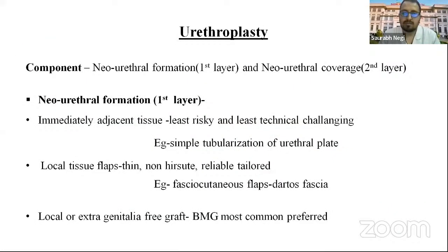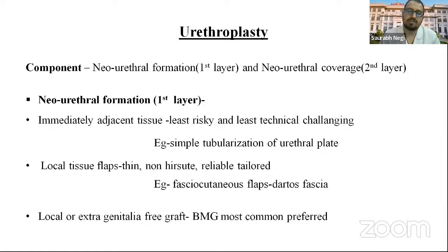Urethroplasty has two components: neo-urethral formation and neo-urethral coverage. Neo-urethral formation can be made using adjacent tissue, which is least risky and least technically challenging — for example, simple tubularization of the urethral plate. Or using local tissue flap, which is thin, non-hair-bearing, and reliable — for example, fasciocutaneous flap such as dartos fascia. It can also use local or extra-genital free grafts, such as buccal mucosa graft, which is most commonly preferred.